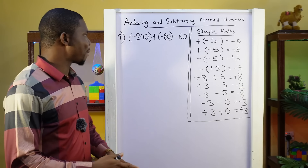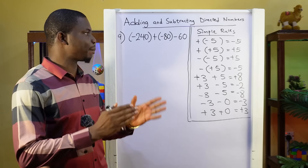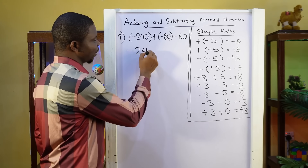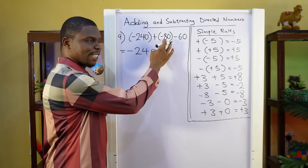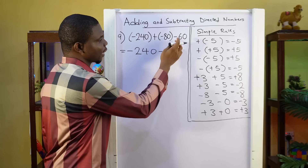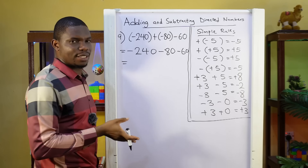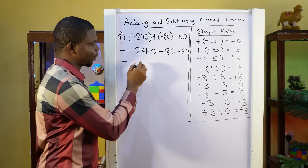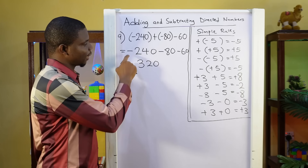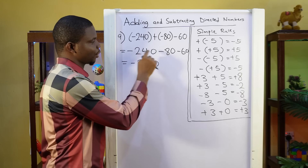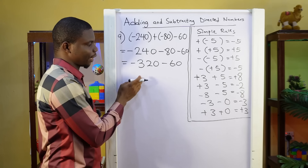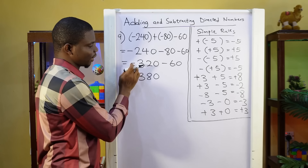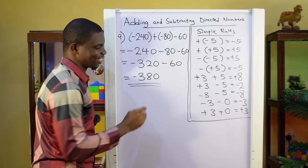Question 9: minus 240 plus minus 80 minus 60. First we open the brackets: minus 240. Plus doesn't change the sign inside the bracket, so that remains minus 80. And then minus 60. We take them two at a time: minus 240 minus 80 — same signs, so we add: 240 plus 80 is 320. We take the negative sign, giving minus 320, then minus 60. Same signs again: 320 plus 60 is 380. We take the negative sign. So our answer is minus 380.